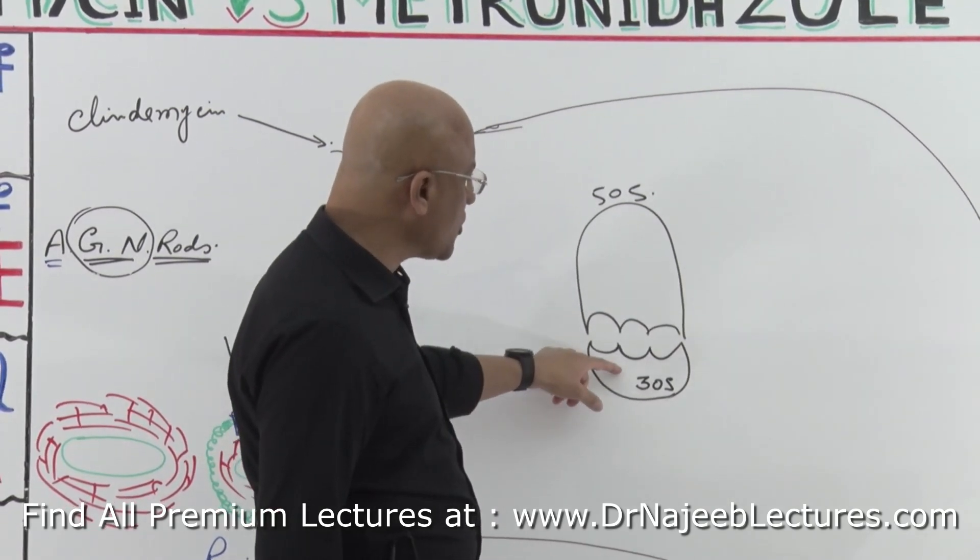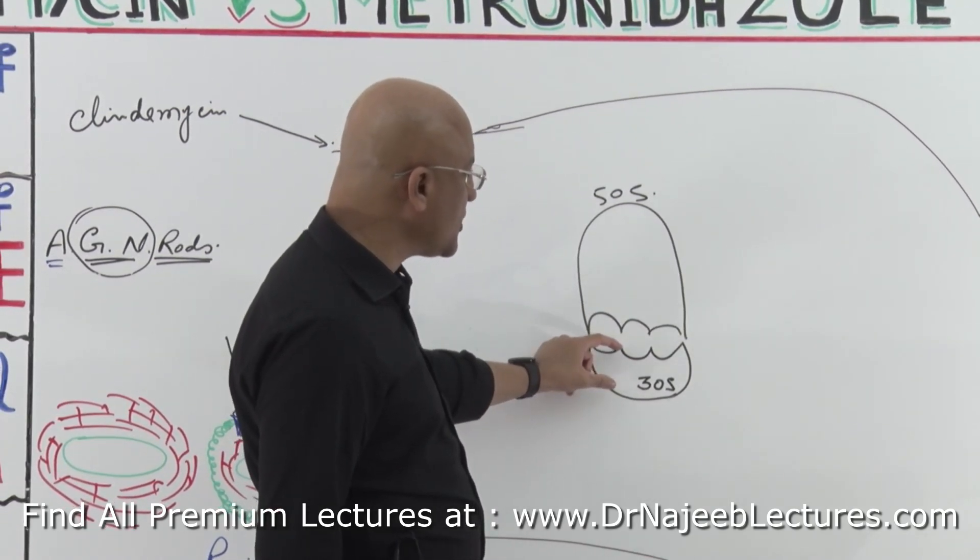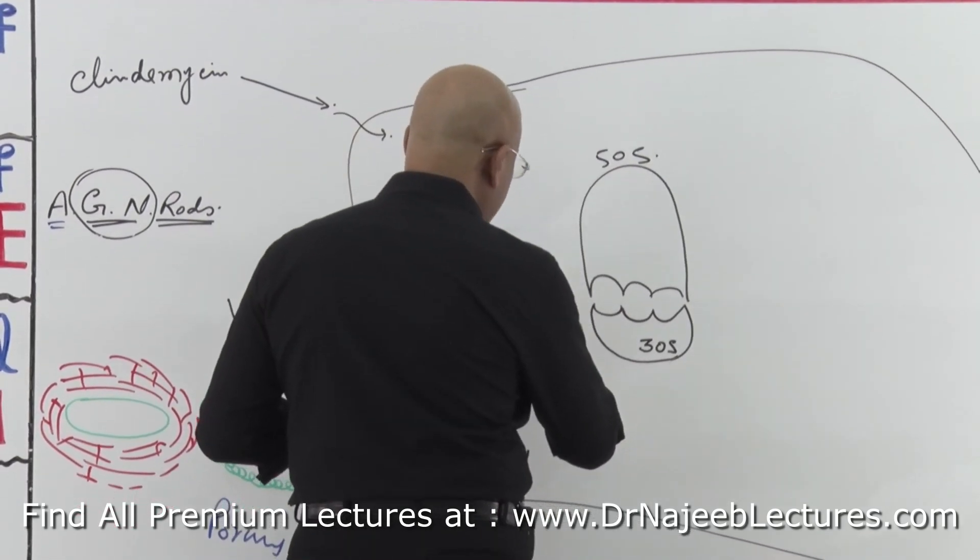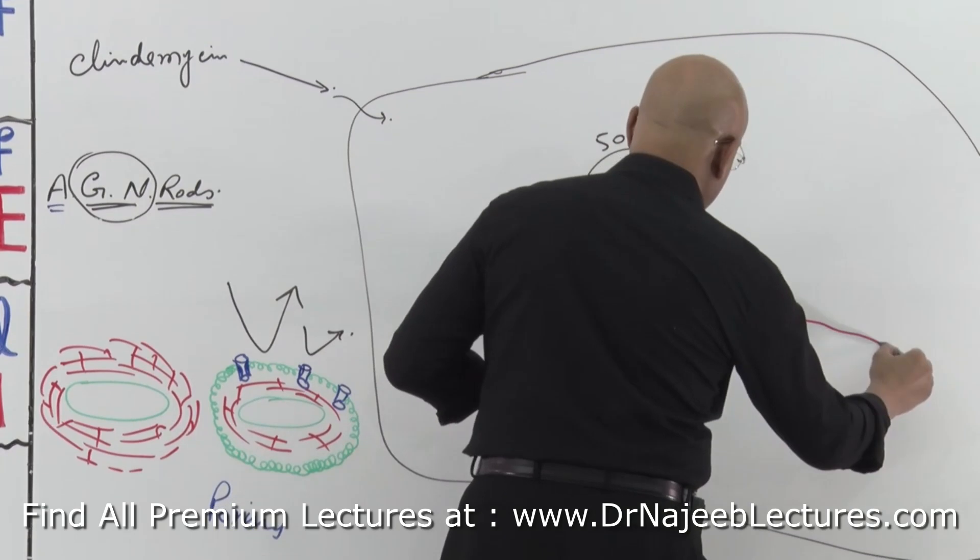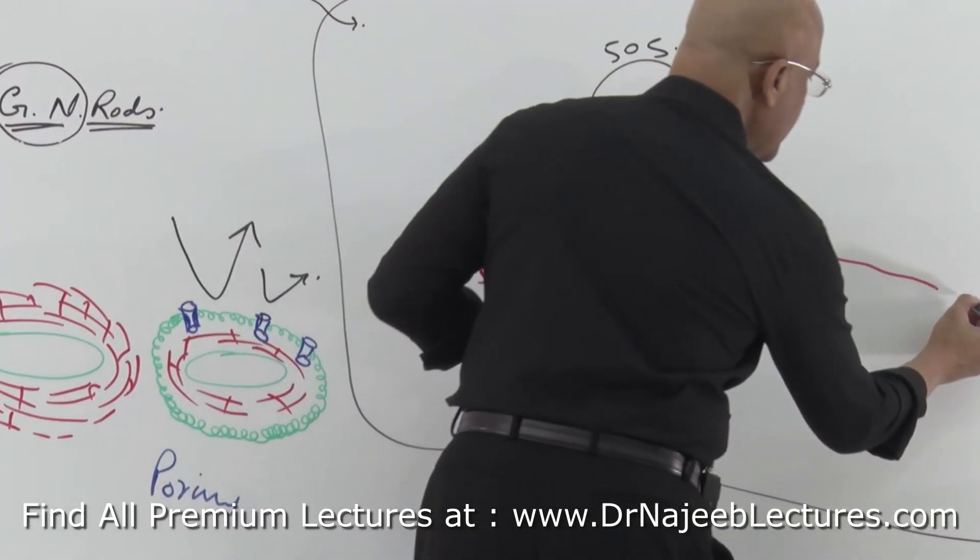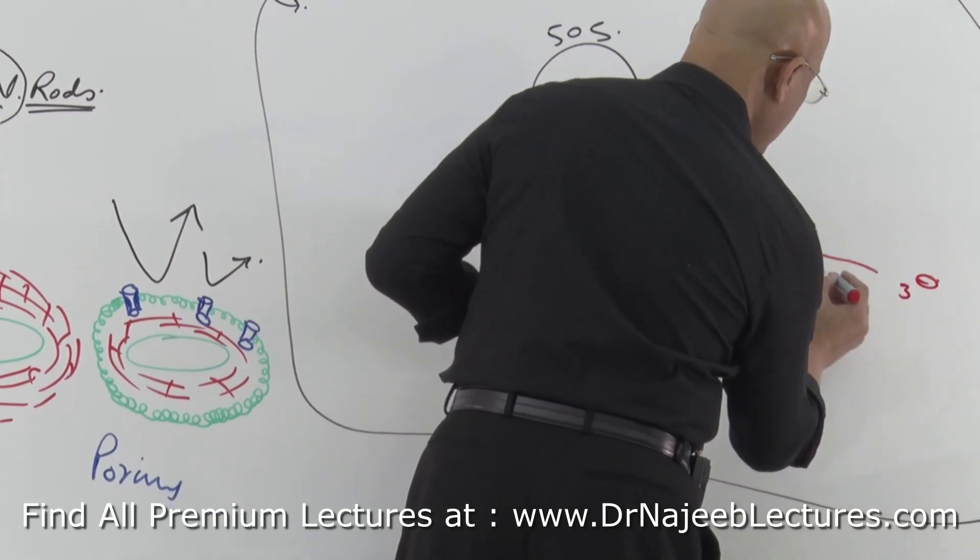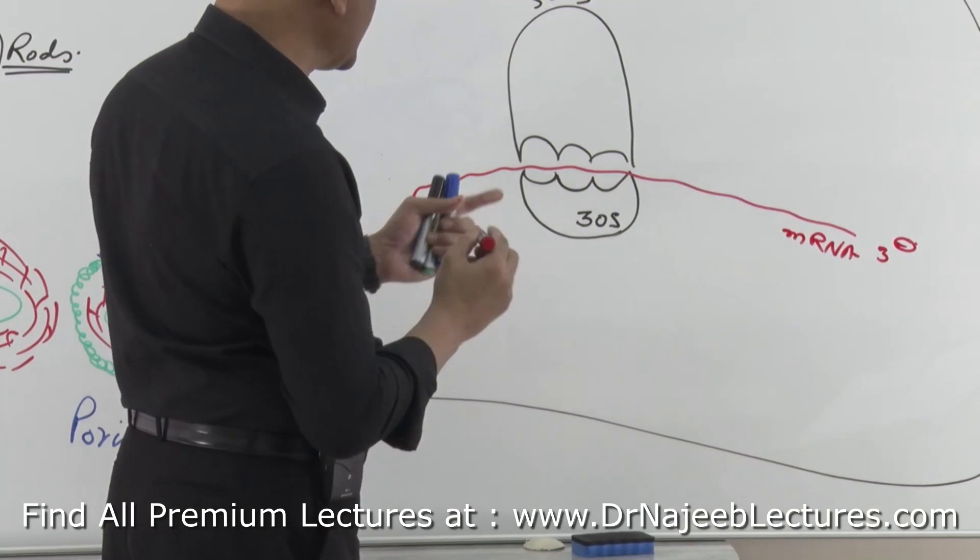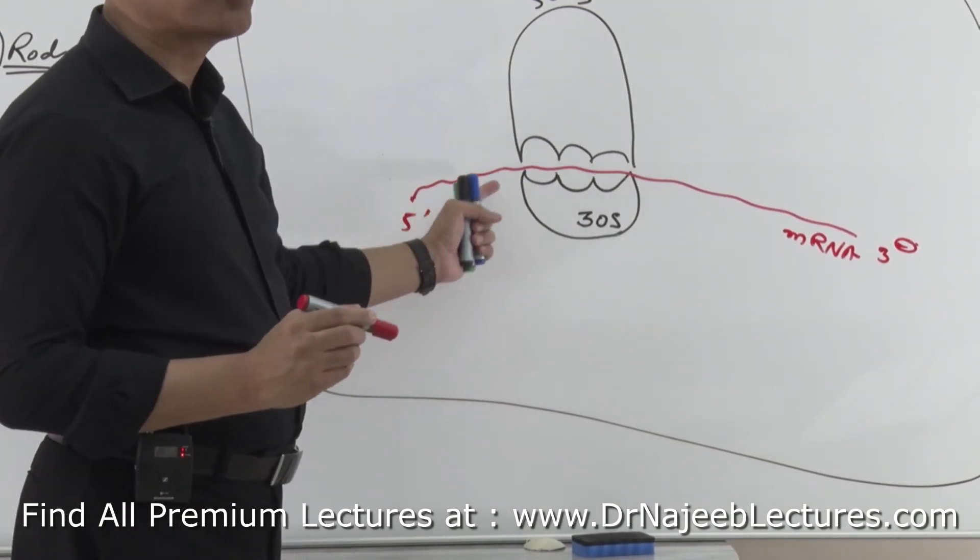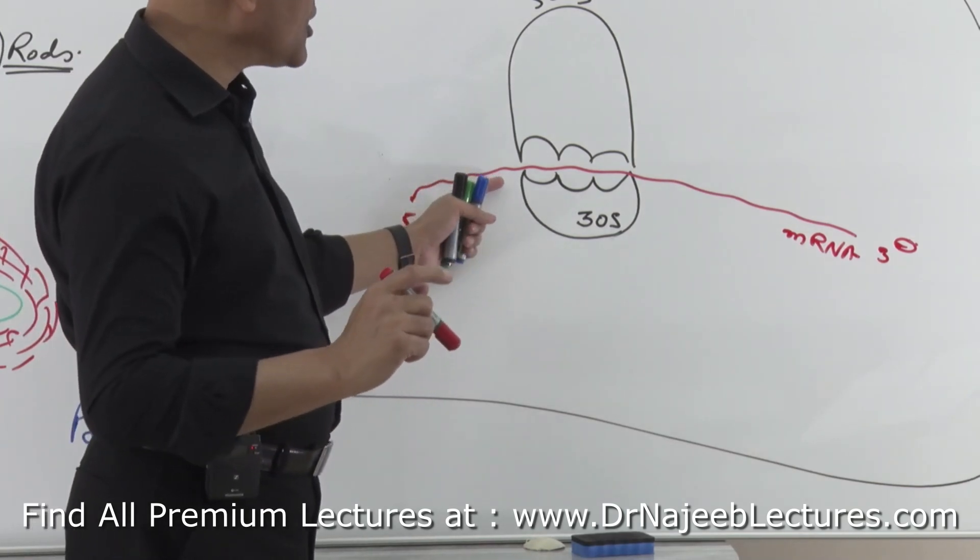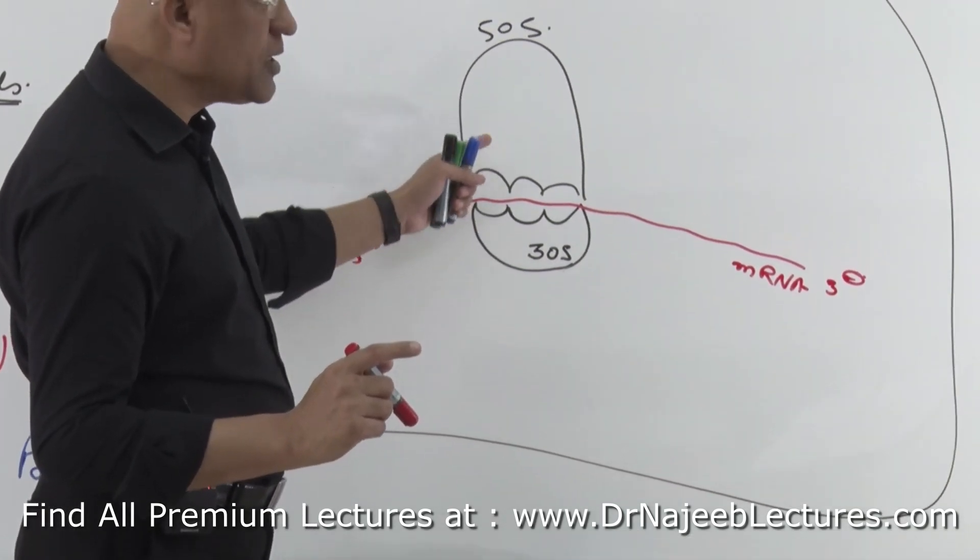As I mentioned, bacterial ribosomes have a smaller unit which is 30S, and this 30S unit is loaded with messenger RNA. This is the 5 prime part of messenger RNA, this is the 3 prime part. Messenger RNA has all the information on how to synthesize protein in association with ribosomes.